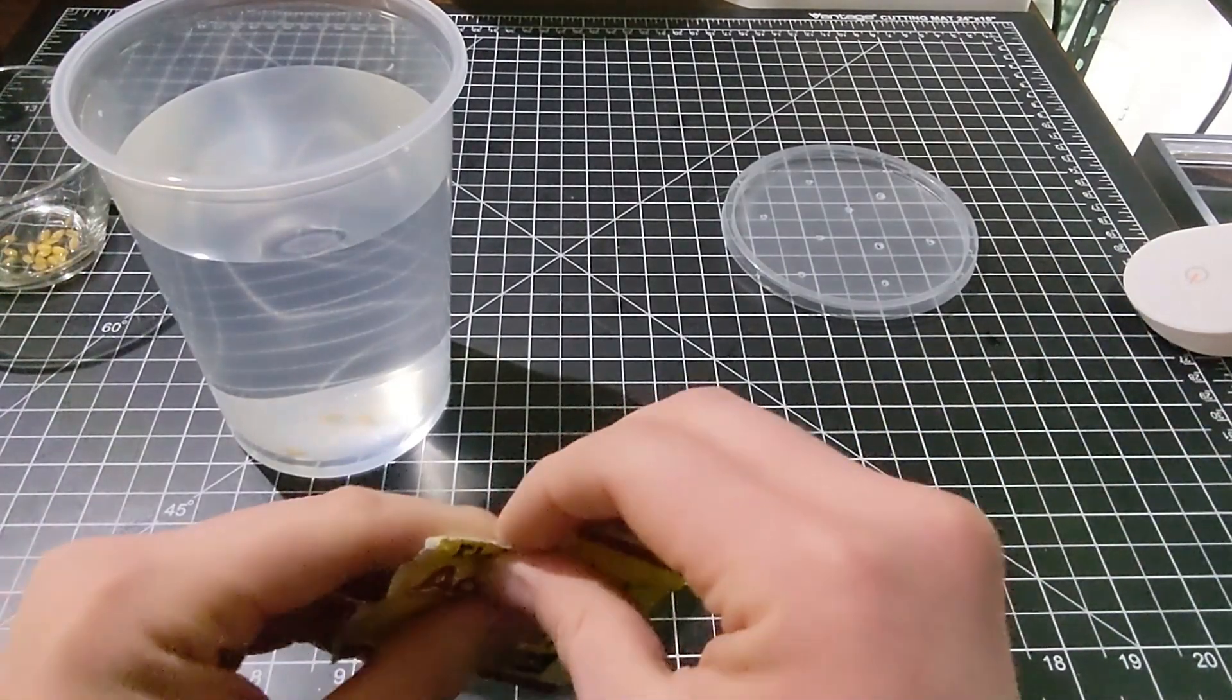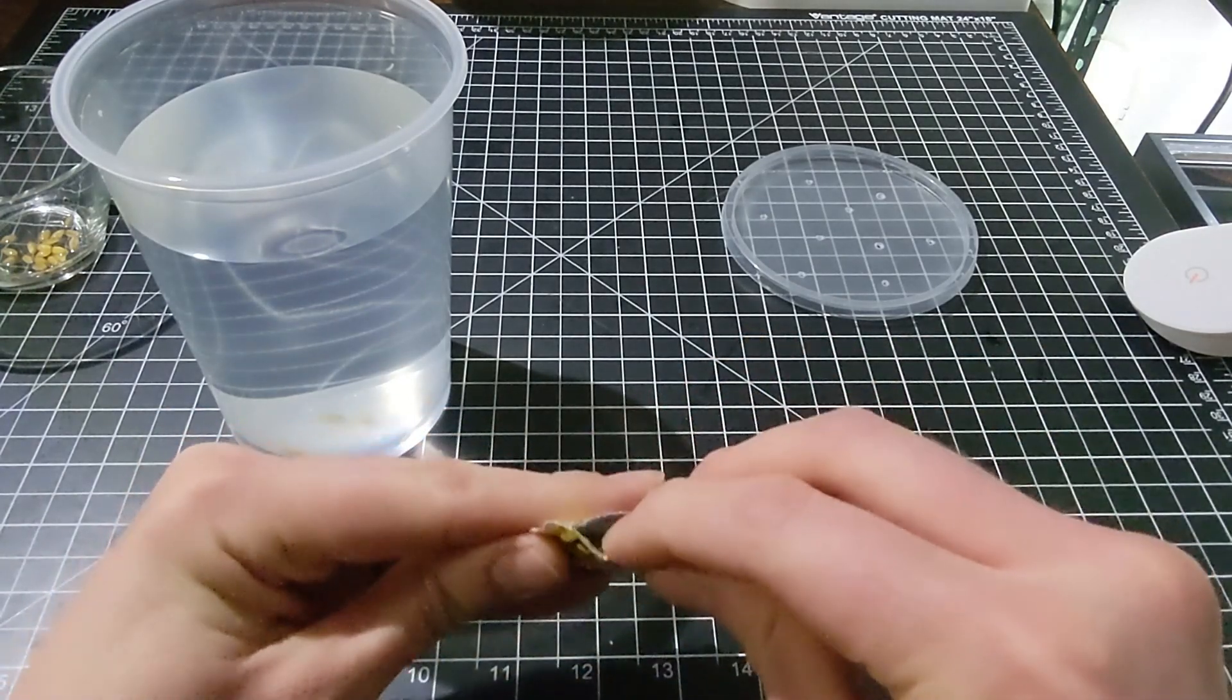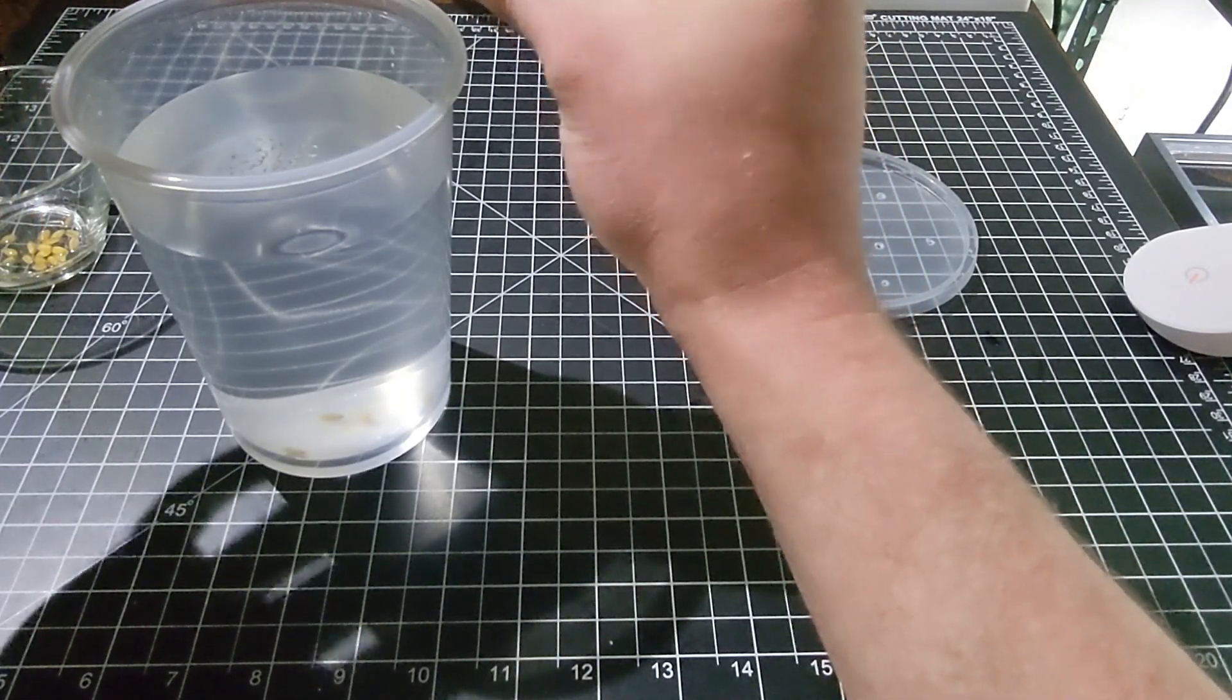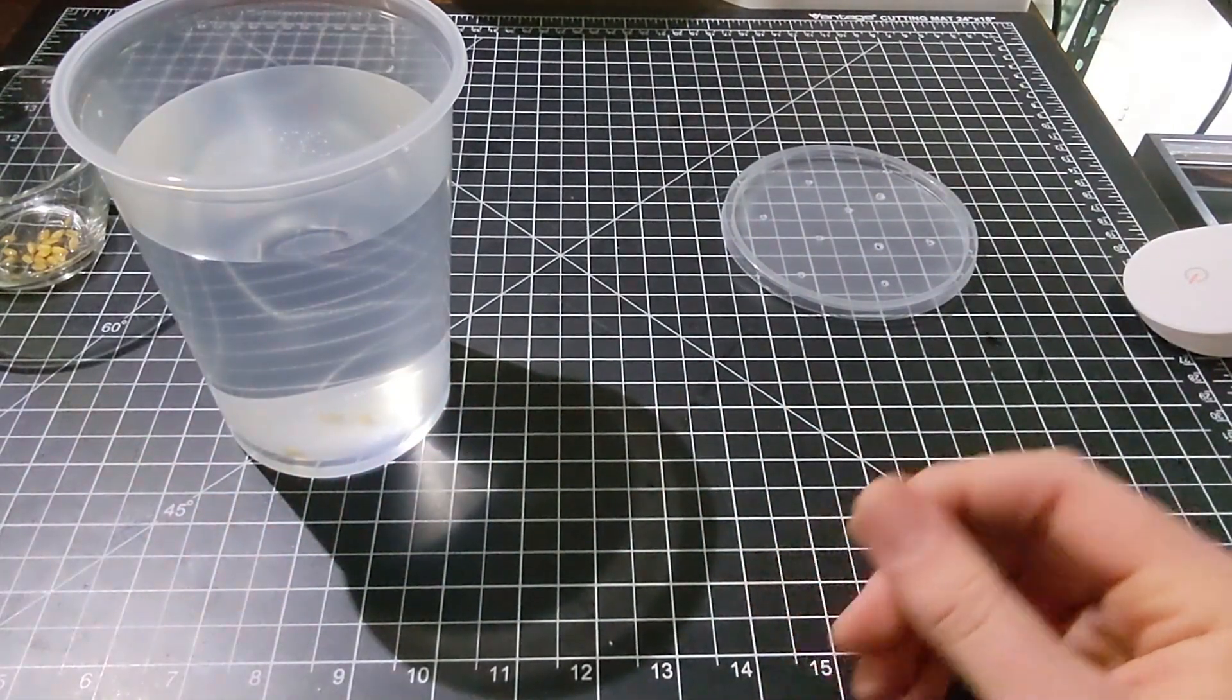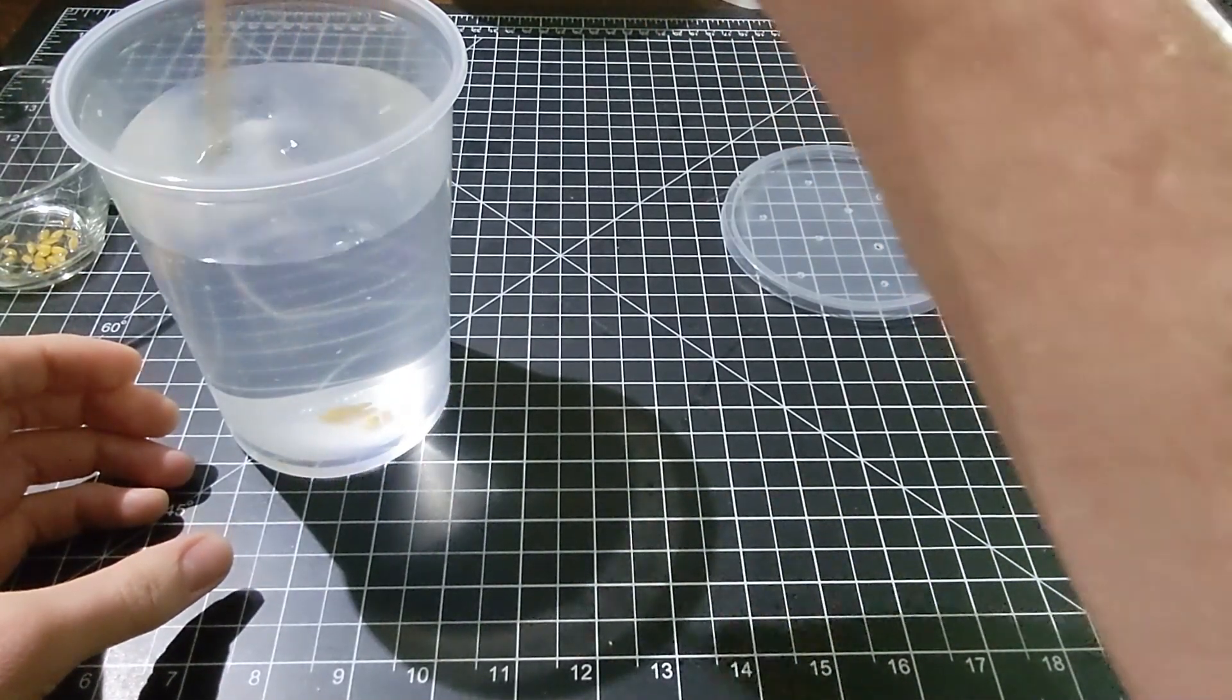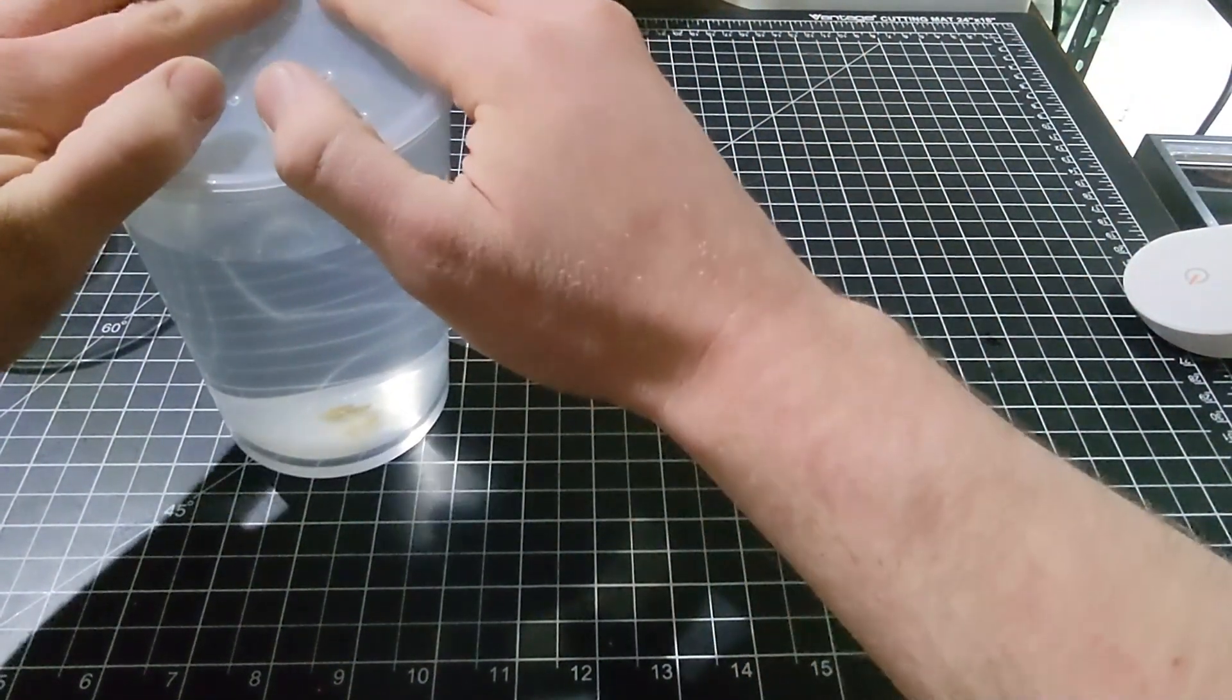You don't need a lot of yeast either, because we're going to get this ready in advance of the culture actually coming, so there will be time for a very small population of yeast to feed off of the grain and then grow. Just a few grains is fine. Just stir that up to let it start spreading around, and we're just going to let it sit, hopefully for a couple of days before your culture comes.